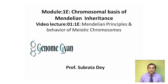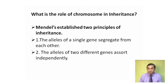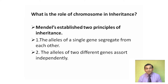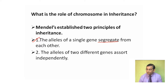In this module, I will discuss the chromosomal basis of Mendelian inheritance. What is the role of chromosomes in inheritance? Mendel established two principles of inheritance. First, the alleles of a single gene segregate from each other. Second, the alleles of two different genes assort independently. These are the two principles of the Mendelian pattern of inheritance.